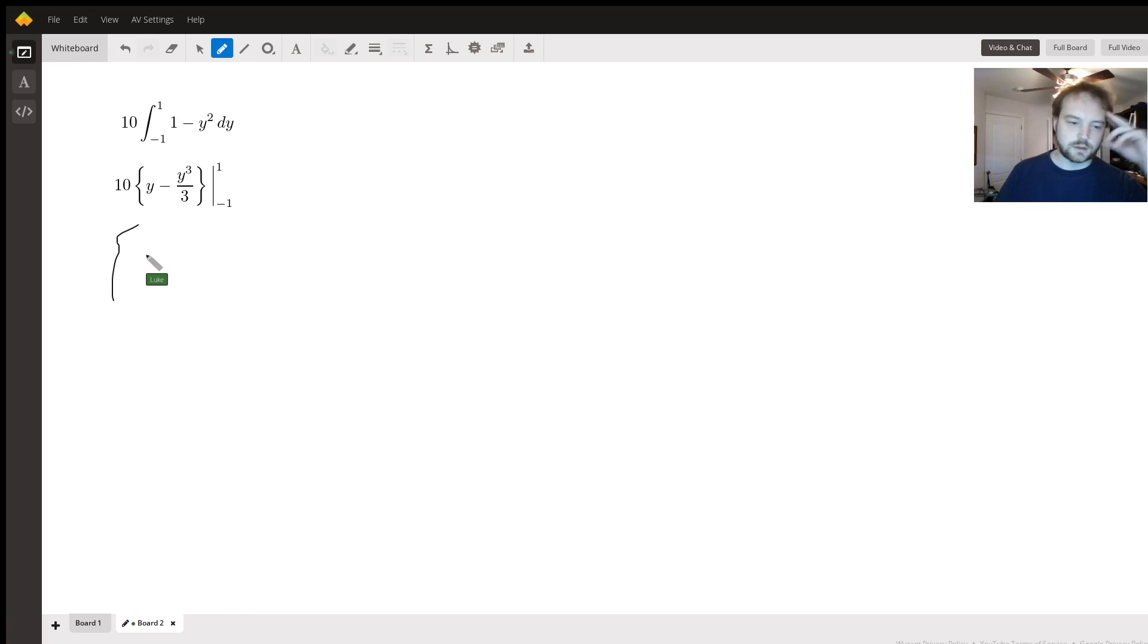We'll forget about the 10 for a second. So this is going to be 1 minus 1 third minus, and then in parentheses, we'll do negative 1 minus negative 1 cubed is negative 1 over 3. So we can cancel those out. And then when we distribute this negative sign, we'll get a plus here and a negative here. So this will be 2 minus 2 thirds, which is 4 thirds.